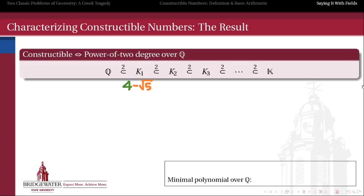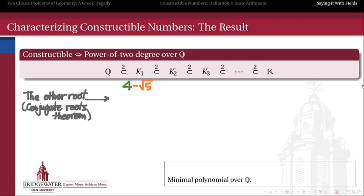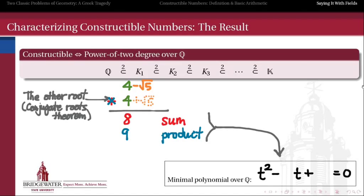What about the more complicated example, 4 minus √5? This wasn't directly the square root of something from Q. But can we find a polynomial equation with rational coefficients that 4 minus √5 satisfies? According to the conjugate roots theorem, the other root that this polynomial will have to have, apart from 4 minus √5, is 4 plus √5. From the knowledge of these two roots, we can construct a polynomial equation that both satisfy. The sum of the two roots is 8, and the product is 9. According to the sum and product theorem, a polynomial equation that has 4 ± √5 as roots is t² minus 8t plus 9 equals 0. So we've found a polynomial with rational coefficients of degree 2 that has 4 minus √5 as a root — that's why 4 minus √5 belongs at the first level, because it's only a quadratic equation away from the rational number field.